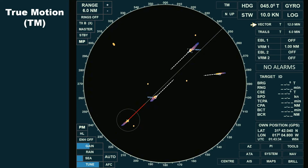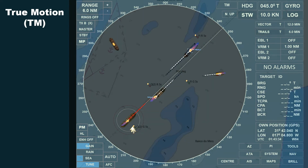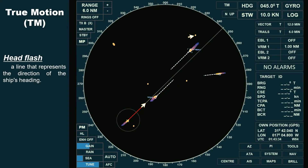On our radar screen, this is our ship, shown offset from the center. The small radar echo visible on her starboard beam is a buoy, along with three other small echoes that can be seen on both sides of the head flash. This is the head flash — a line that represents the direction of the ship's heading.